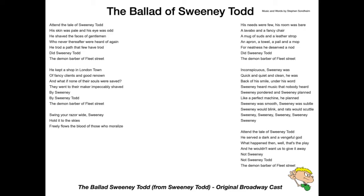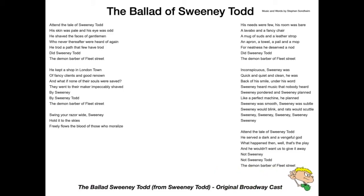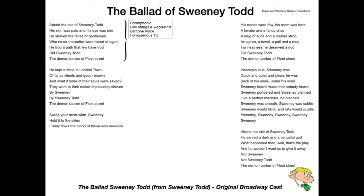I'll play it again and talk over the top. Let's look at the opening and talk about how Sondheim uses voice and orchestra together. This opening section is homophonic in texture — we're going to have a soloist and accompaniment. We have low strings and woodwind in the accompaniment, and the baritone voice singing solo. It's a rather homogenous tone colour — similar range, similar area of our instruments — sounding very much the same. And it's a very brooding opening expression.